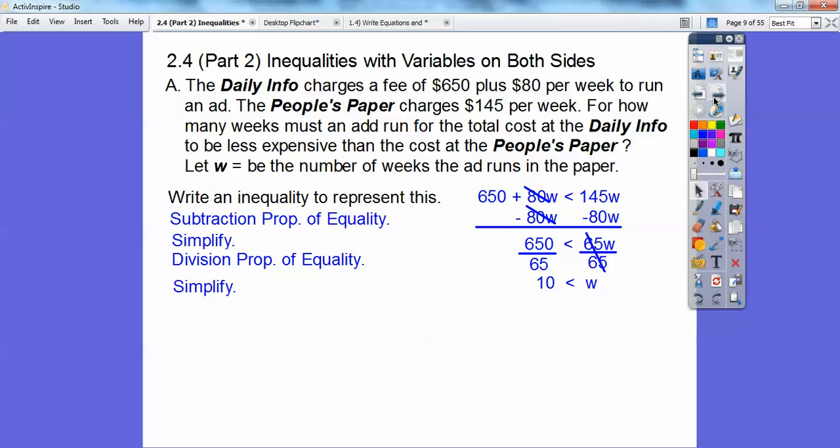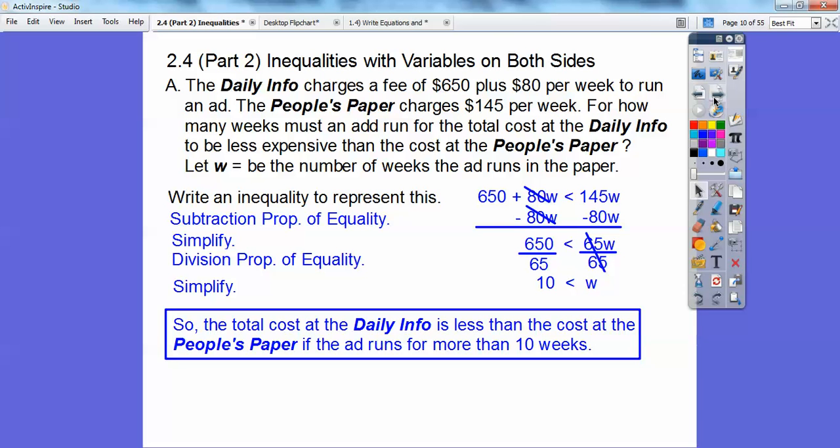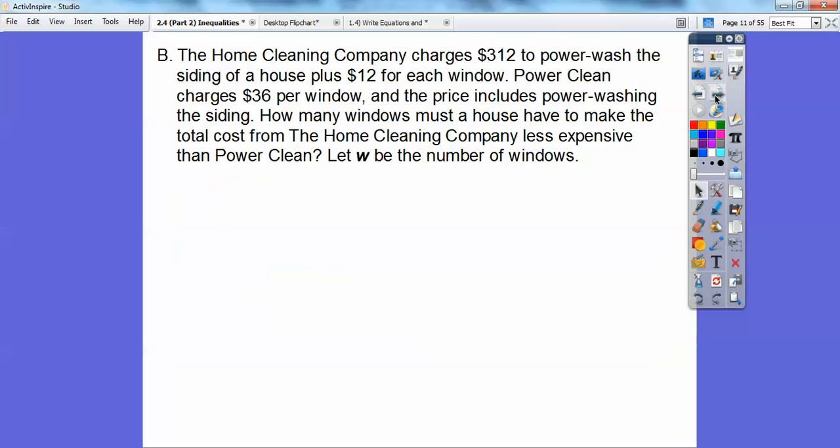So what's that mean? That just means the total cost at the Daily Info is less than the cost of the People's Paper if the ad runs for more than 10 weeks. We need the weeks to be greater than 10. As soon as it gets greater than 10, then the other one becomes more expensive. Let's try another one.